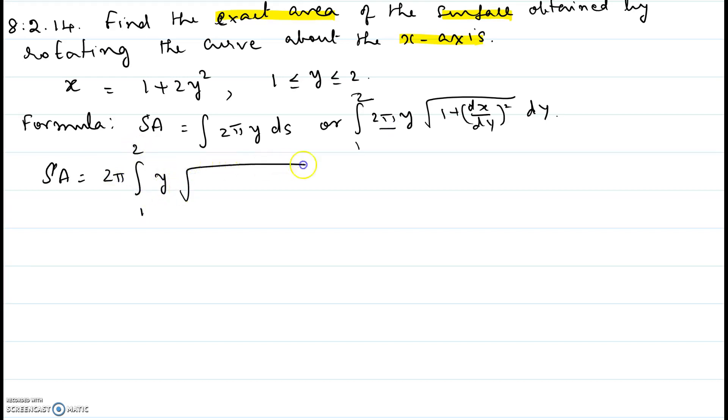x is given to be 1 plus 2y squared, so dx/dy is going to be 4y. So we are going to apply that—just 4y the whole squared dy. So it is 2π integral from 1 to 2, y times square root of 1 plus 16y squared dy.